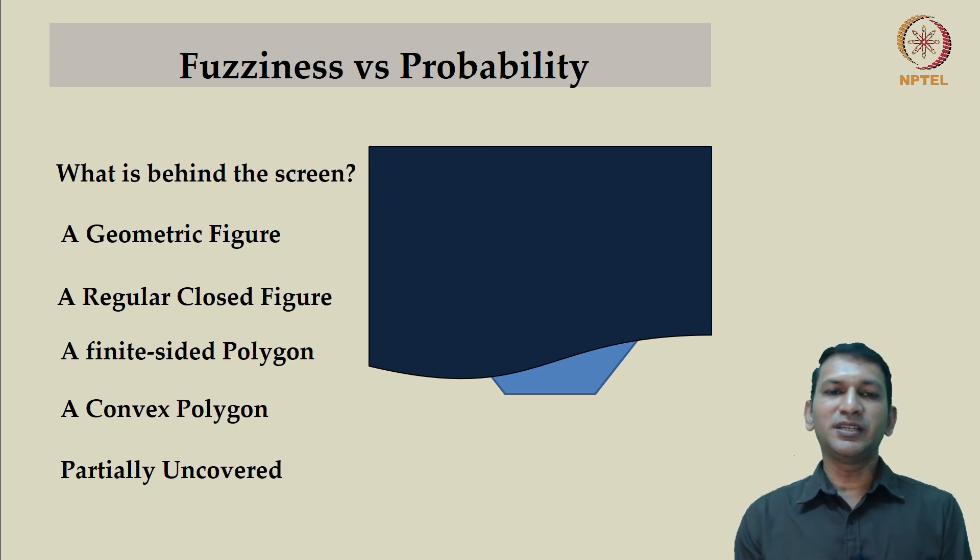The point that we are trying to drive home here is that with more and more information seeping in, we are able to revise our probabilities. But now probabilities are actually assigned to a random experiment. The question is, how was this object picked and hidden behind the screen? This was done in a random manner. Among the different possibilities, randomly one such object was chosen, a geometric figure was chosen and hidden behind the screen.